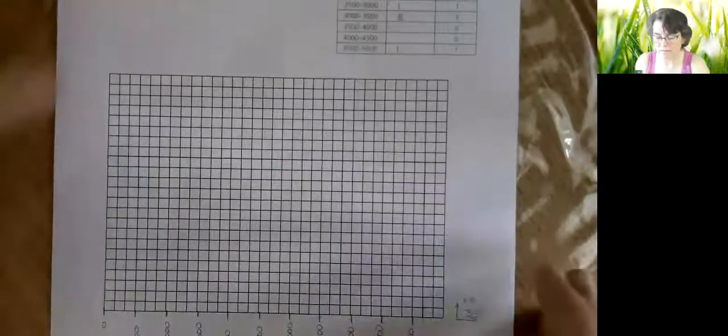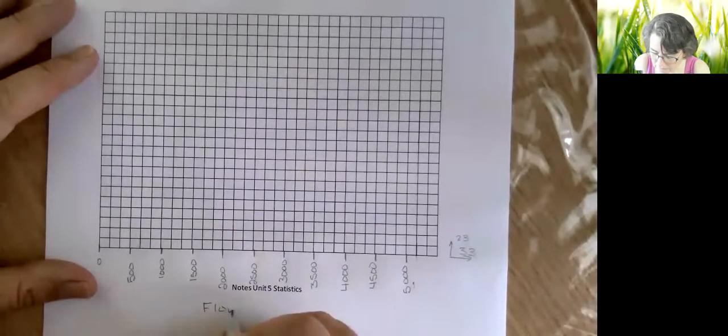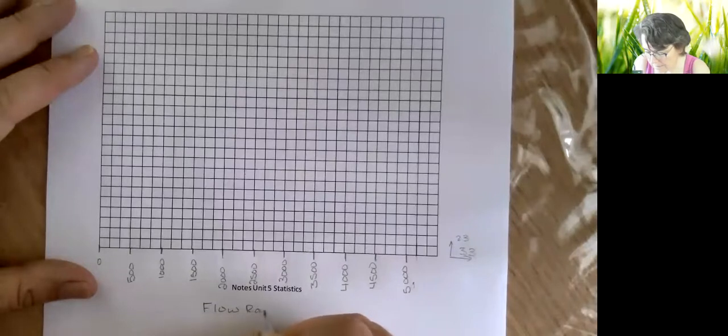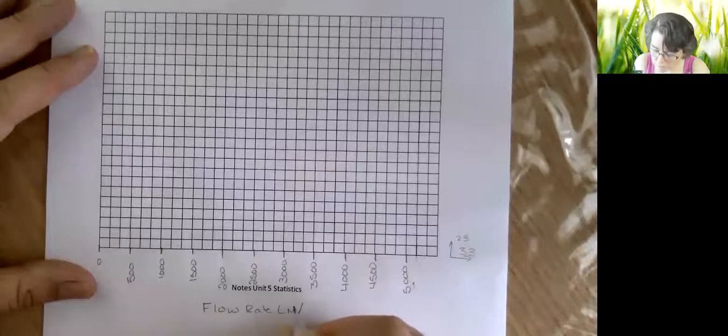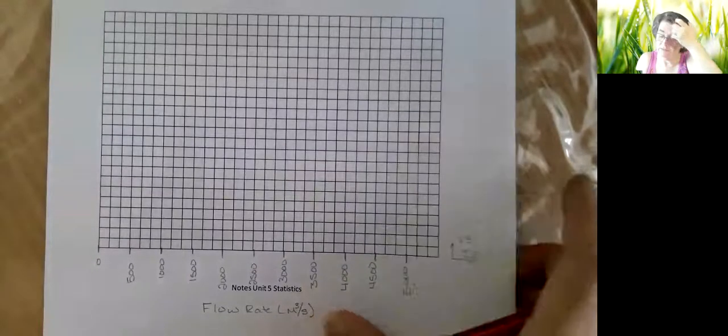So we've got that. Now when you do your x-axis you also need to label it, so this should say flow rate in meters cubed per second. All right, so that's how you do it. Now my y-axis has to do with my frequency.